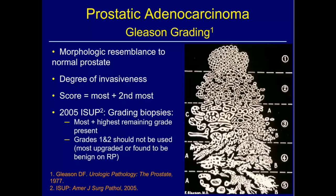The classic Gleason grading system took into account the heterogeneity of prostate cancer that Gleason first discovered. He said these tumors sometimes have mixtures of patterns, and they actually behave somewhat in between the two. So he created the Gleason score by putting the most prevalent pattern and the second most prevalent pattern together. Then along came the ISUP — the International Society of Urologic Pathologists — in 2005.